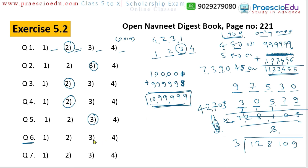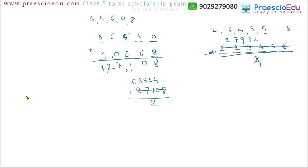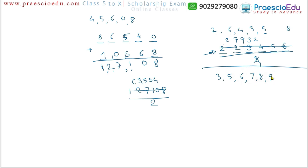Our answer is 10,99,999, but no option matches. If such a situation comes in an exam, you can maintain any one option as an answer. Now question number 7: which is the greatest 7-digit number formed by using each of the digits 3, 5, 6, 7, 8, 9 only one time, and it must be divisible by 11? These are 6 digits, so we form a 6-digit number first and check divisibility by 11.